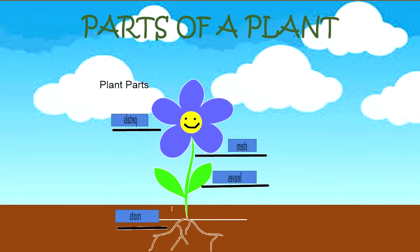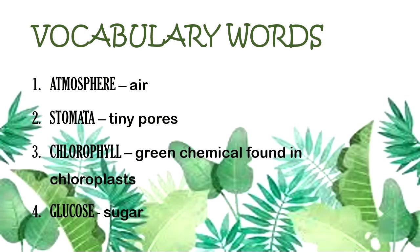Words to know: Air, atmosphere, stomata — the tiny pores in leaves — chlorophyll — the green chemical found in chloroplasts — and glucose, the sugar made after the process.